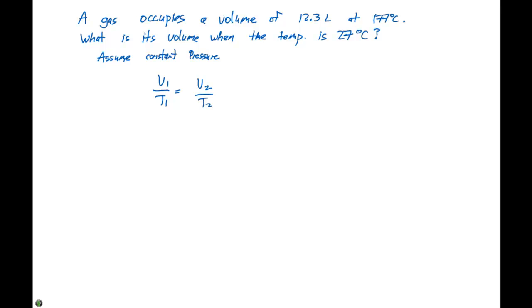If we wanted to express this as a combined gas equation, we would say P1V1 over T1 equals P2V2 over T2. But if we have constant pressure, the P1 and P2 are going to cancel out. So let's look at what we have here.